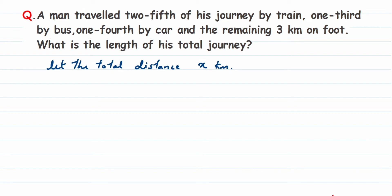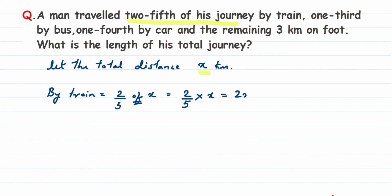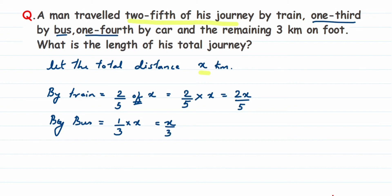The total journey distance is x kilometers. So two-fifths of the journey by train will be two upon five multiplied by x, which is 2x/5. By bus, he traveled one-third, which is one upon three into x, giving us x/3.